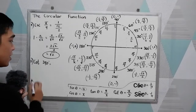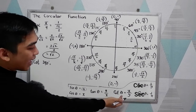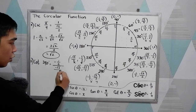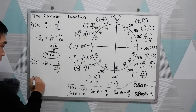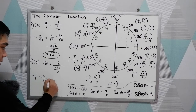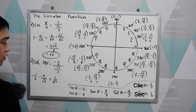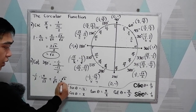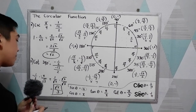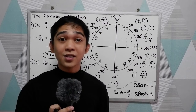Our last example: cotangent 240 degrees. Find 240 on the unit circle. Cotangent is x over y. We have x = −1/2 and y = −√3/2. So we compute −1/2 over −√3/2. Copy −1/2 times the reciprocal −2/√3. Negative times negative gives positive, leaving 1/√3. Multiply by √3/√3 to rationalize, giving √3/3. This is the final answer. So that is the circular function. Thank you for watching.